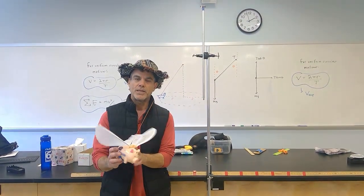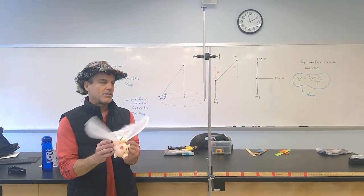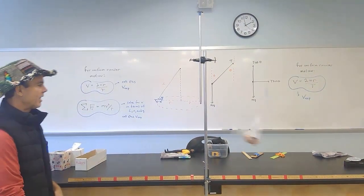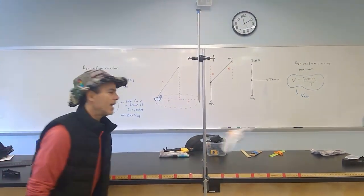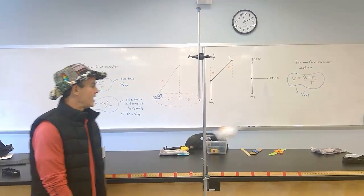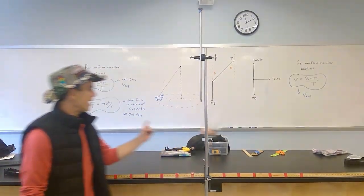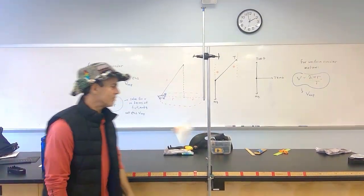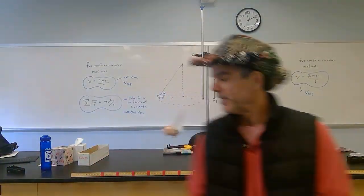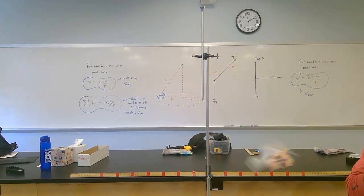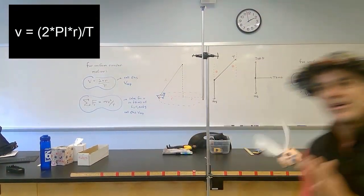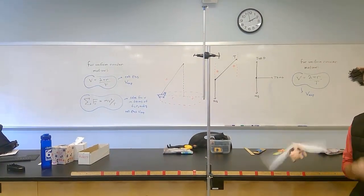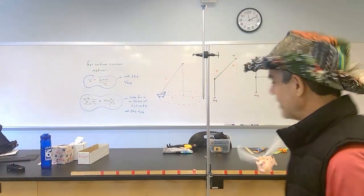Here's our pig. The pig's name is Frank. Frank is going to fly in a circular path, hopefully at a constant speed. And as Frank is moving around the circular path, let's assume he's moving at a constant speed. The speed of an object moving in uniform circular motion is given by 2 pi r divided by the period. In this case, we can measure the period just by using a stopwatch.